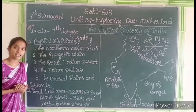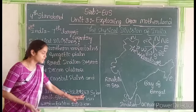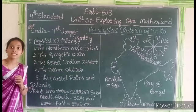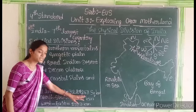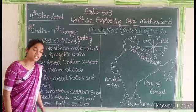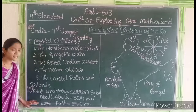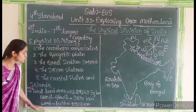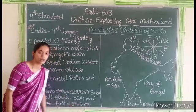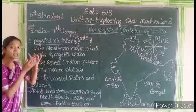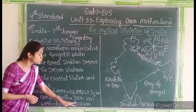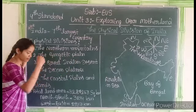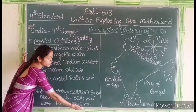The total land area of India is 3,287,263 square kilometers. The distance from north to south is 3,240 kilometers, and west to east is 2,933 kilometers. The distance from north to east is 3,840 kilometers.